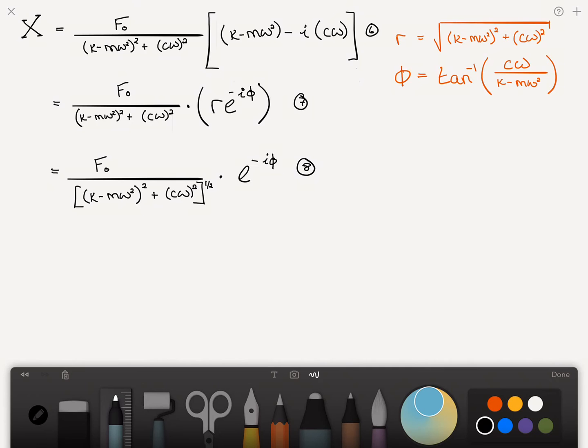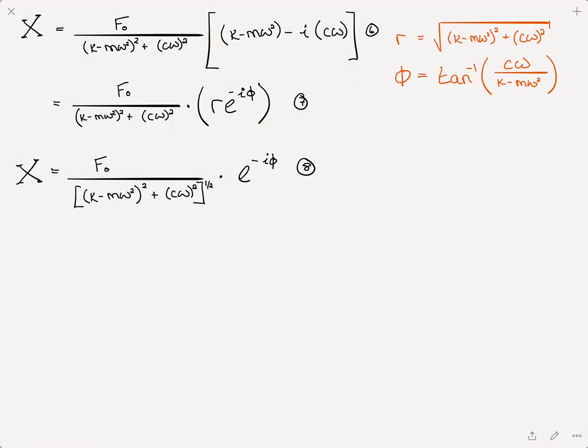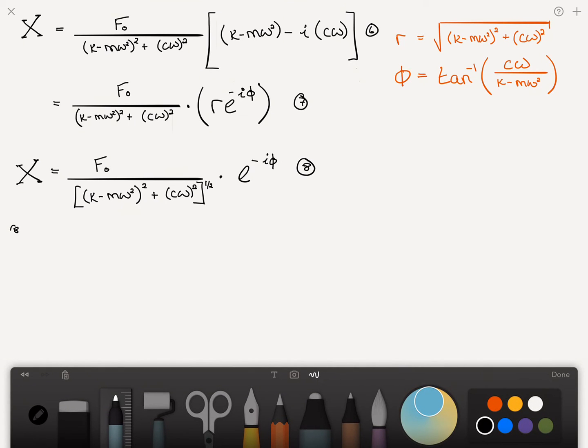And when I substitute r in here, I find that the numerator and the denominator are different. In other words, rewriting this, I can write it as F zero divided by k minus m omega squared quantity squared plus c omega squared. And this will get to the bottom. So I've got this on the bottom. I've got the square root of this on the top. When I divide the two, I end up with the square roots on the bottom. Times e to the minus i phi. And I'm going to leave it as... I'm not going to substitute the phi in here at this point, just for neatness.